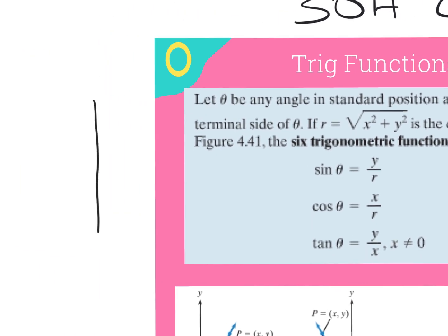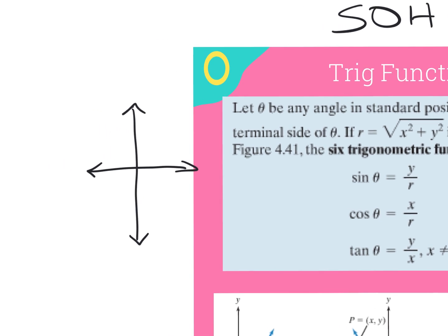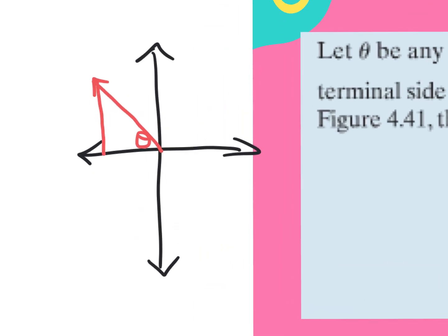Let's say we have our coordinate plane and we've graphed a triangle. Say they ask us to graph the 135-degree angle over here. We're going to create a triangle by drawing the side back to the x-axis, because our reference angle — our theta — is there. That gives us the opposite side, which is our y value, the hypotenuse which is our r value, and the adjacent side which is our x value.